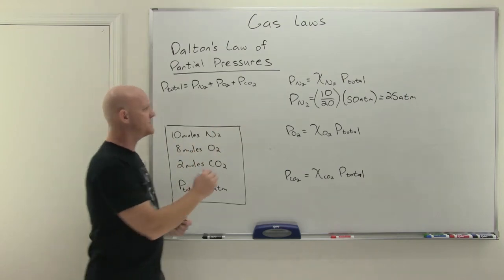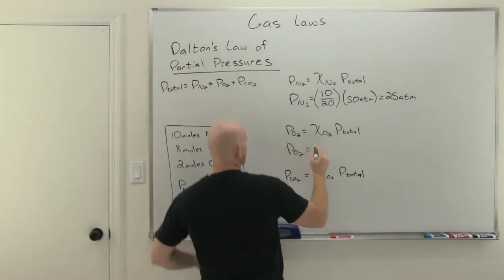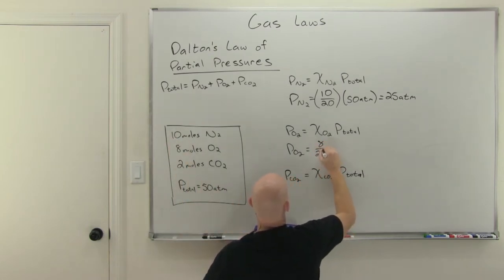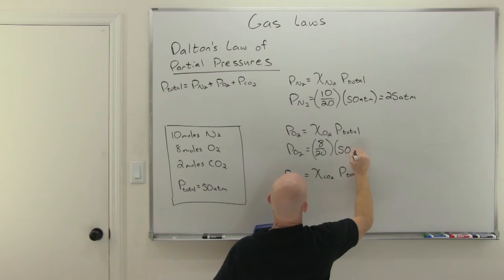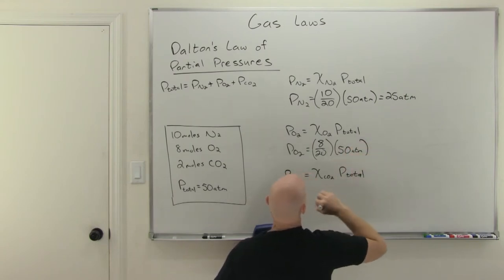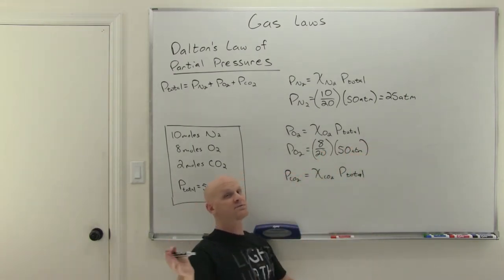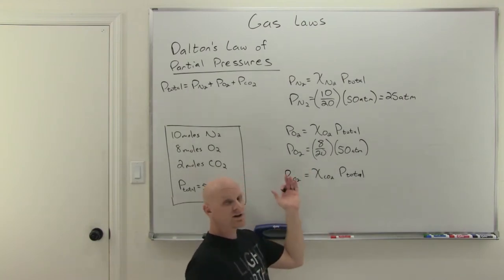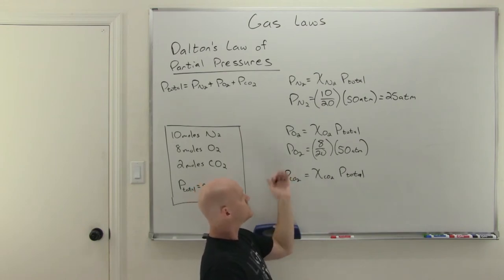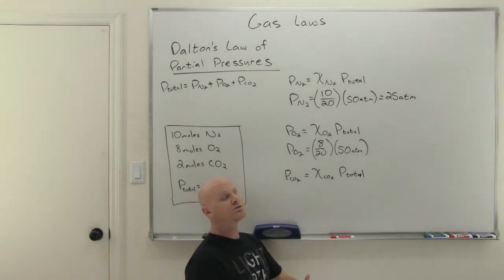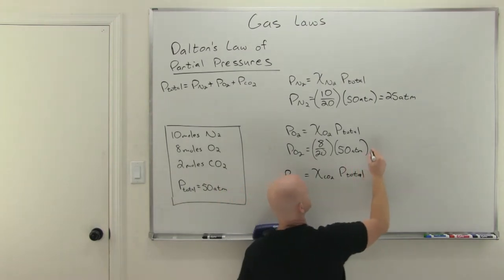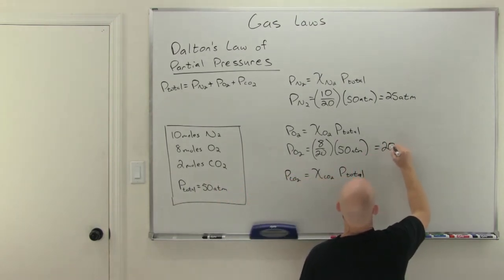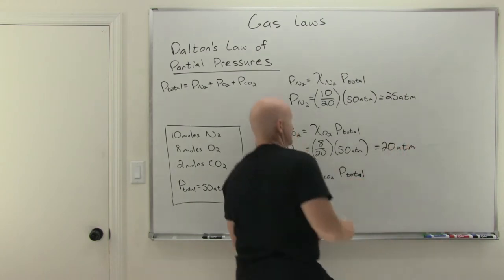We can do the same thing for O2. The partial pressure of O2 equals the mole fraction — in this case 8 out of a total of 20 moles — times the total pressure of 50 atmospheres. 8 out of 20 reduces to 4 out of 10, which is 40%. If O2 represents 40% of the moles of gas, then it's responsible for 40% of the total pressure, which comes out to 20 atmospheres.